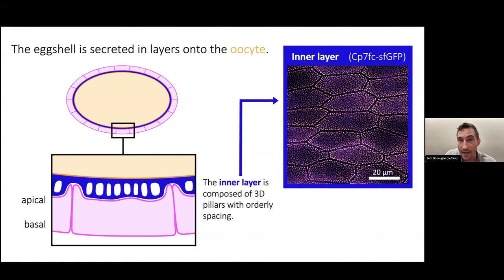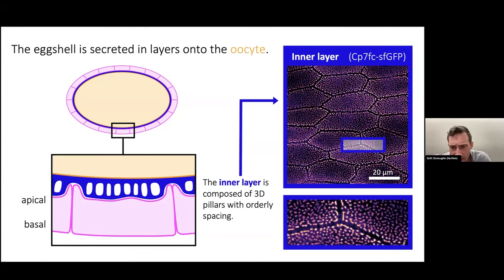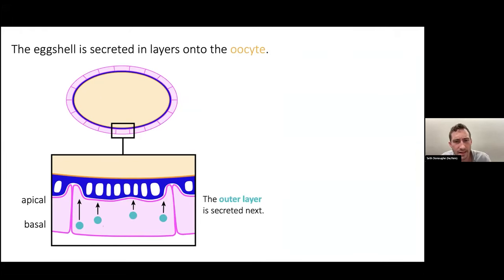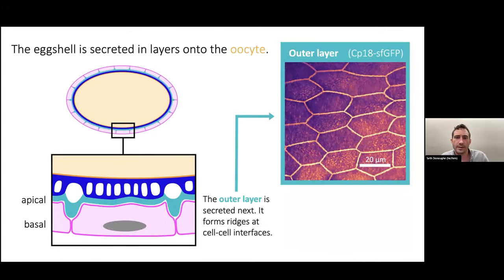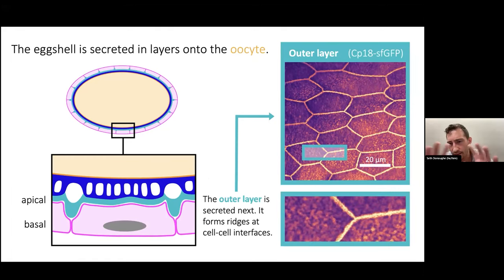The eggshell is actually secreted in layers onto the oocyte. It's kind of 3D printed down by the apical surface of these cells. There's this inner layer that's composed of 3D pillars, like pillars holding up a roof, and they have orderly spacing to them. We can highlight them with the protein that's the main constituent—I've got an endogenous tag labeled superfolder GFP of this protein called CP7. When you zoom in, you can see that these pillars are arranged in interesting and spaced patterns. Then on top of that is this outer layer that I'm showing in turquoise here. This is labeled with a different protein, and it forms ridges at the cell-cell interfaces and has textural features happening over the medial parts of the cells.